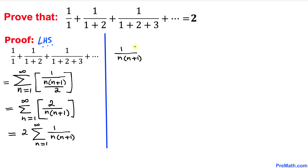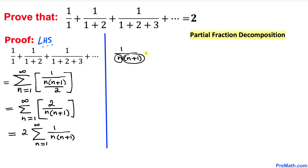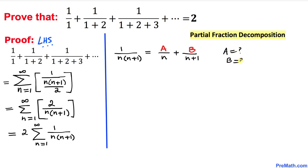Now let's focus on the fraction 1 over n times (n plus 1). I'll show you a simple way to decompose this into two simpler fractions using partial fraction decomposition. Since we have two linear factors in the denominator, we can write this as A over n plus B over (n plus 1), and our next task is to find the values of A and B.